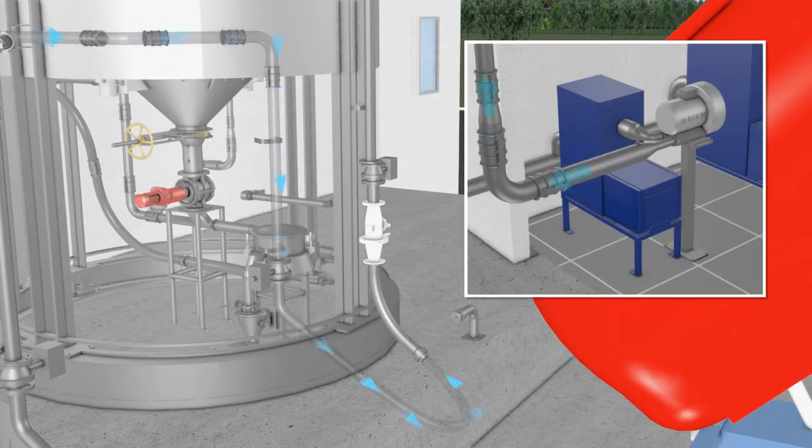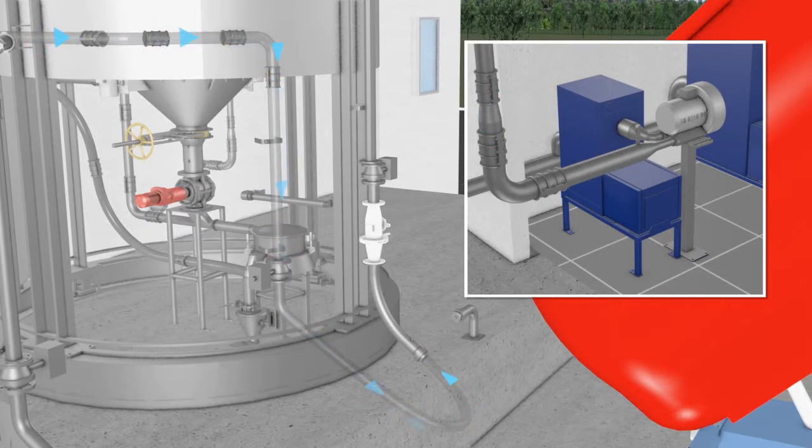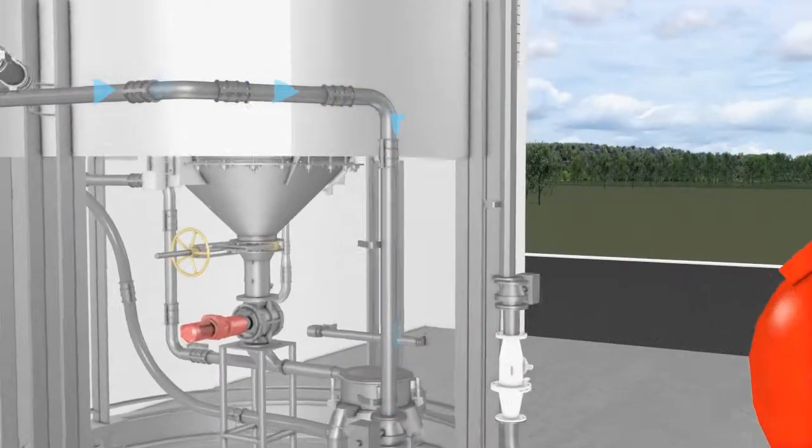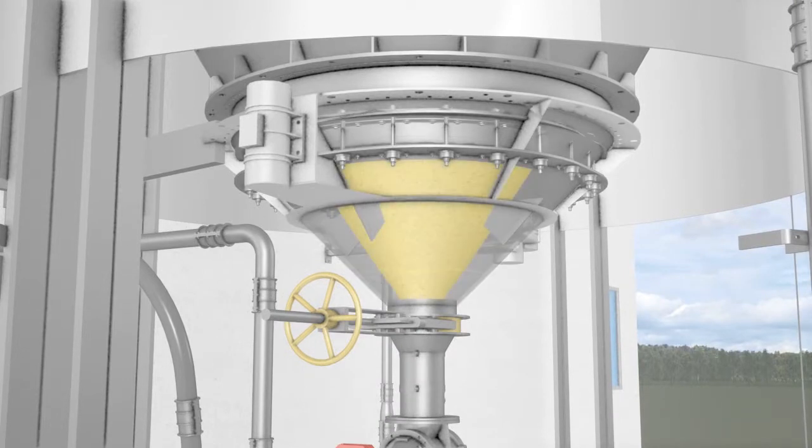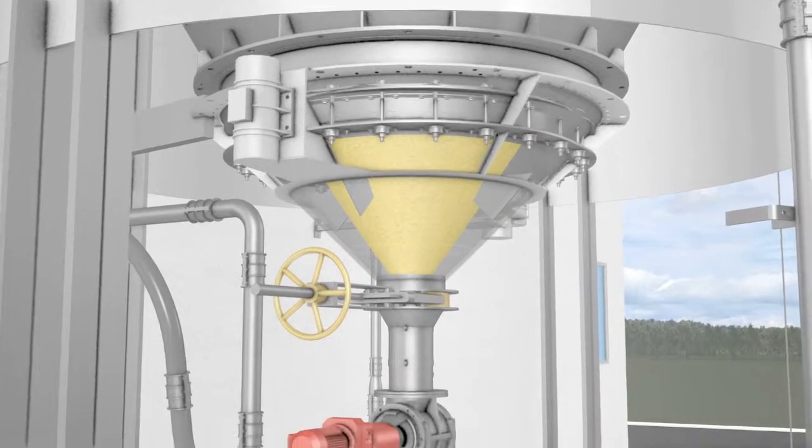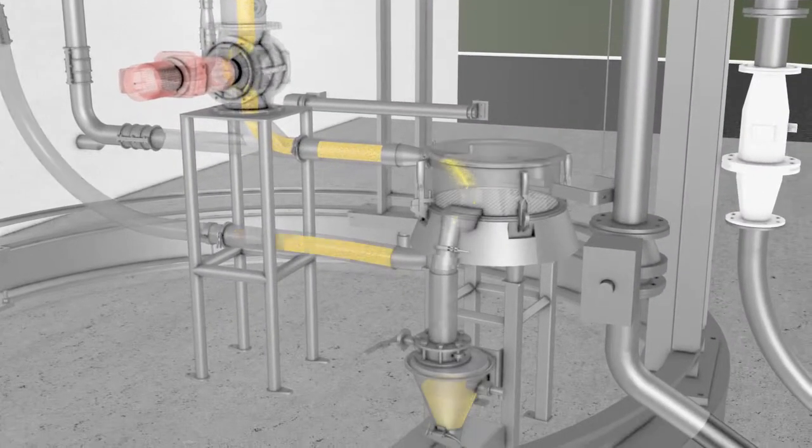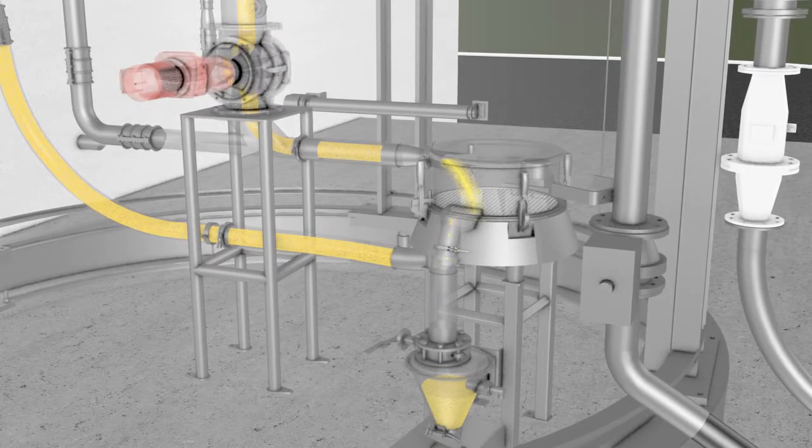The silo is continuously blanketed with dry air in order to preserve the highest product quality. A vibrating base facilitates the extraction of the product and a control sieve ensures no irregularities enter the process flow.